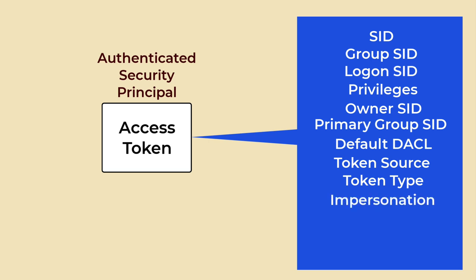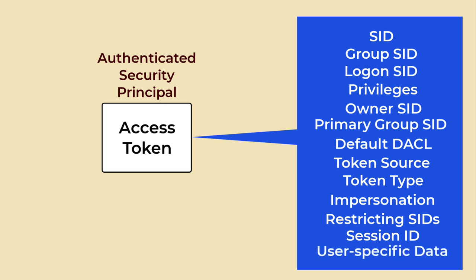Impersonation Level indicates the level of impersonation and determines the extent to which a server process can act on behalf of a client process. The levels include anonymous, identification, impersonation, and delegation. Restricting SIDs are optional and can restrict the token, limiting the actions that the user can perform even if the user has the necessary permissions. Session ID identifies the session associated with the token and helps track user activity and manage resources for each session. User Specific Data may include additional attributes specific to the user, such as user profile paths, home directories, and other custom attributes.